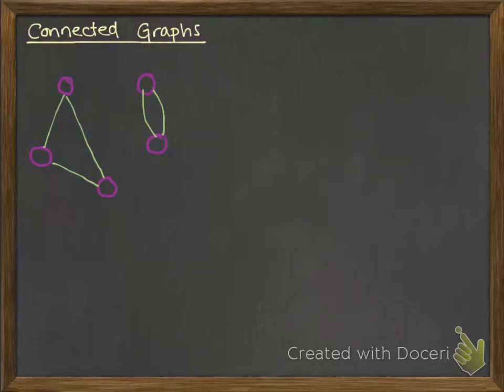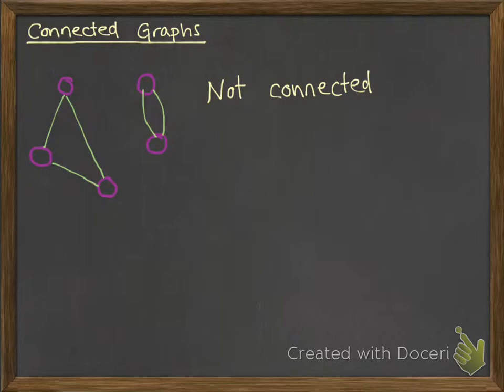We're going to take a look at connected graphs now. Starting with this example, you might look at that and say, well, that graph is connected — all of the nodes are connected to at least one other node. But that's not what we mean by connected. This graph is not connected because we've got those two separate pieces.